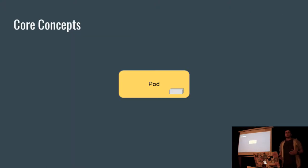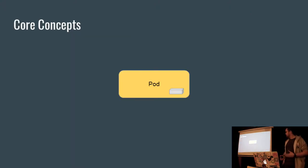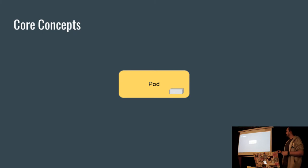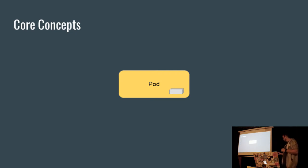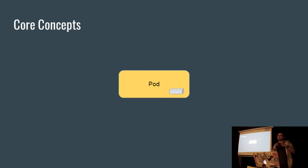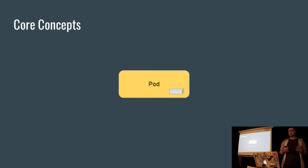I'm going to go over some core concepts of Kubernetes. The smallest unit that Kubernetes cares about is a thing called a pod. A pod can have one or more containers within it, but Kubernetes doesn't care about the containers — the smallest thing it will work with is the pod. The pod is a single runnable thing, so a single instance of your application.